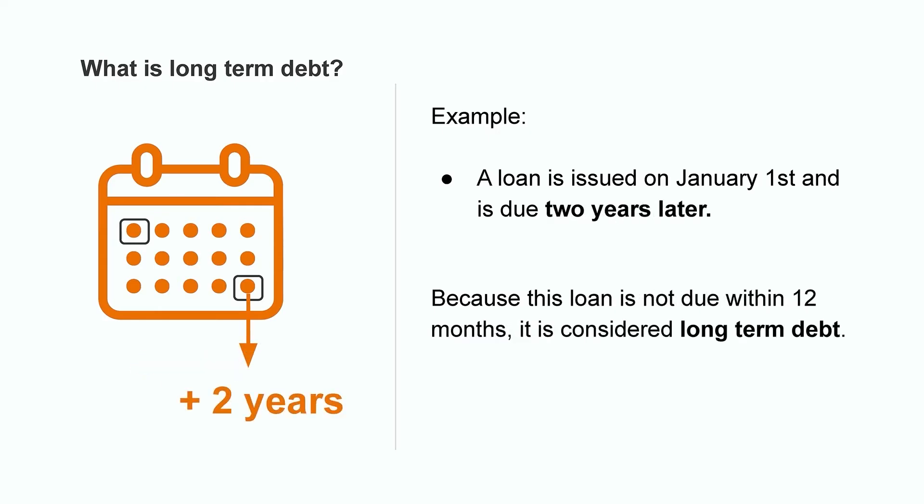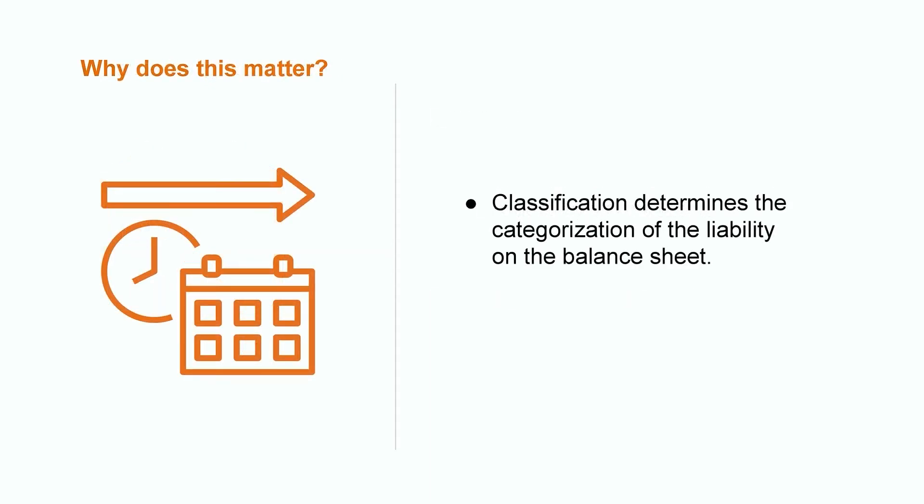However, in the event they needed the loan for a longer period of time and it didn't come due until two years later, this is the type of loan that would be considered long-term debt. Why does this classification matter? Well, this will determine the category of liability that the debt will fall under on the company's balance sheet, which ultimately impacts decisions by users such as banks and investors.